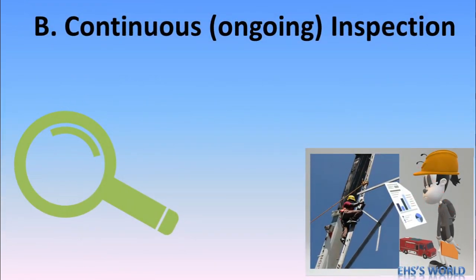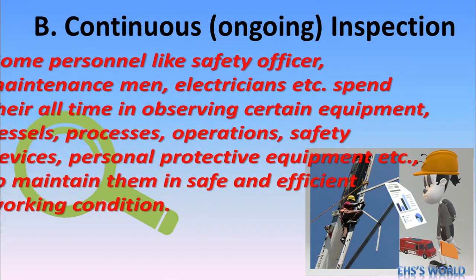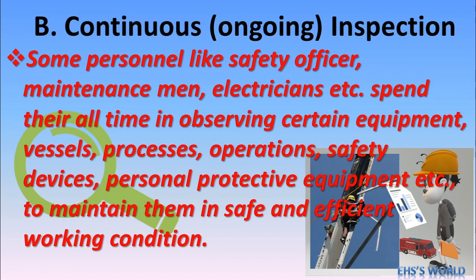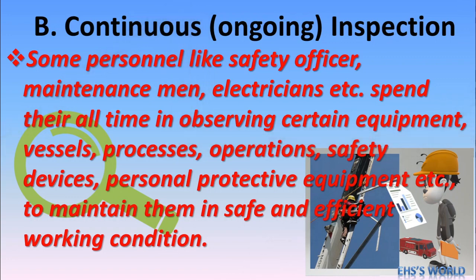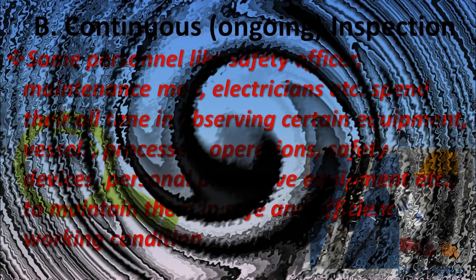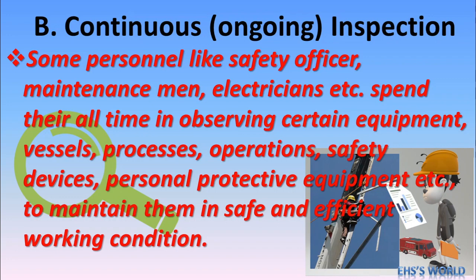Continuous inspection (Part B): some personnel like safety officers, maintenance men, electricians, etc. spend all their time observing certain equipment, vessel processes, operations, safety devices, and personal protective equipment to maintain them in a safe and efficient working condition. For example, in one shift an electrician moves around electrical panels and electrically operated equipment — that is continuous inspection.